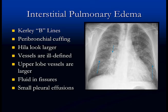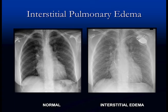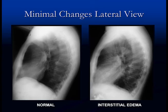As edema progresses we start to see more lines and different changes. We get Kerley B lines — perpendicular lines due to fluid in the interlobular septa of the lung. We get peribronchial cuffing visible in the hilar regions, and fluid in the fissures as well. All the hila are big, the vessels are ill-defined and indistinct. This is interstitial pulmonary edema.